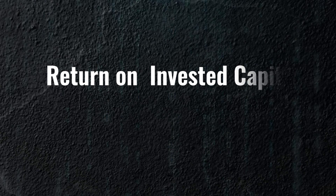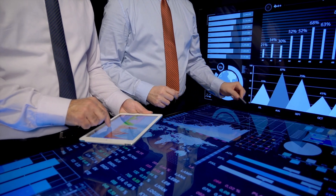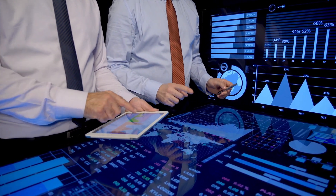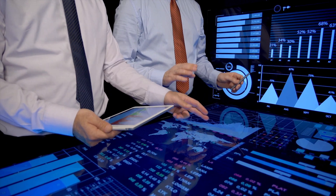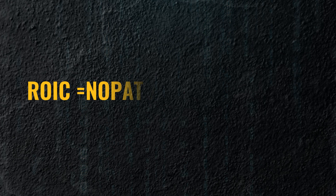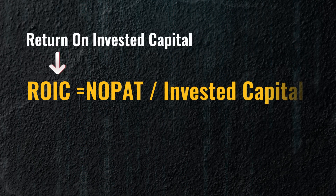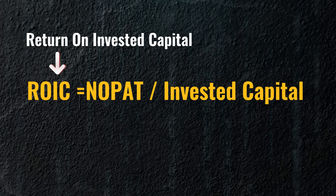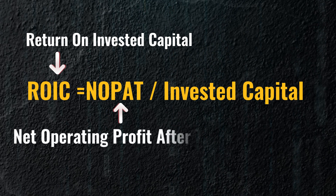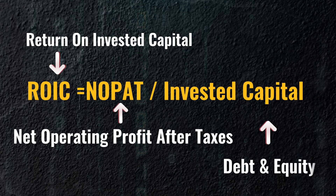To overcome ROE's limitations, let's consider another indicator: Return on Invested Capital, or ROIC. ROIC, also known as the Investment Capital Return Rate, focuses on the real return a company can achieve after investing capital to expand production. To calculate ROIC, you can use the following formula: ROIC equals net operating profit after tax divided by invested capital. Where NOPAT is the company's operating profit after taxes, and invested capital is the total amount of capital invested in the business, including debt and equity.